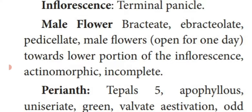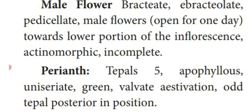First, male flower: bract is present — bractiate; bracteole absent — ebracteolate; stalk is present — pedicellate. Male flowers are present at the lower portion of the inflorescence. Actinomorphic and incomplete — that means one of the whorls is absent. Perianth: calyx and corolla are absent, modified into another form known as perianth. The individual unit of the perianth is a tepal. Five tepals are present in the male flower. They are free — apophyllous — arranged in only one whorl — uniseriate — green in color, valvate aestivation, positioned posteriorly.